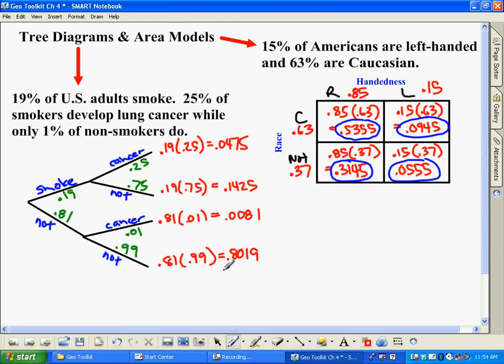So it tells you information whether or not it's an area model or a tree diagram. It breaks things up here so you can see each of the four things that can possibly happen. However, a tree diagram you have to use when you have different rates depending on whether or not in this case you smoke or you don't smoke. Where here, it doesn't matter if you're Caucasian or not, you still have the same chance of being right-handed or left-handed.